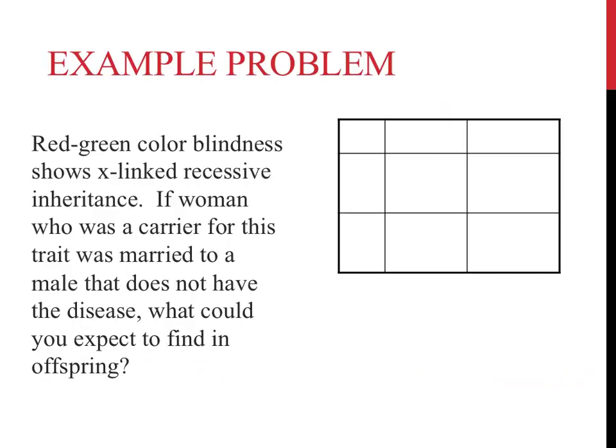The first step to this type of problem, as with all Punnett squares, involves setting up the outside of the Punnett square properly. One thing to always do when approaching X-linked recessive traits is to set up the Punnett square with the sex chromosomes. This is important, as males and females have different sex chromosomes. Failure to set up these problems in this way can lead to wrong answers.